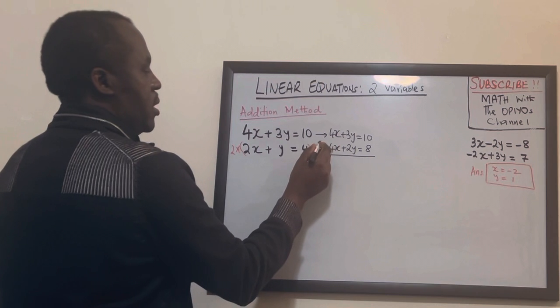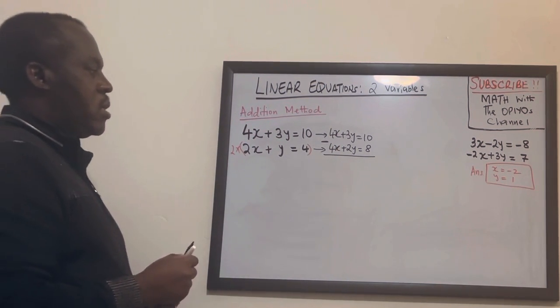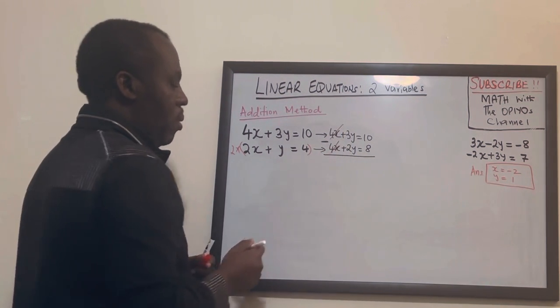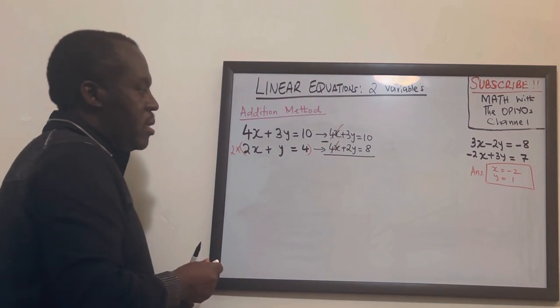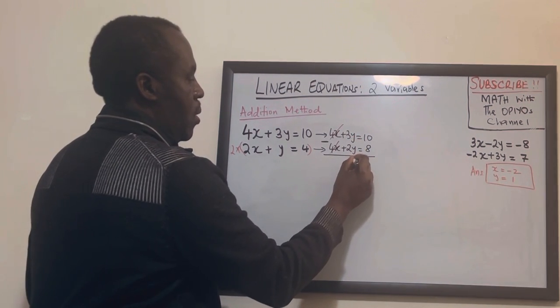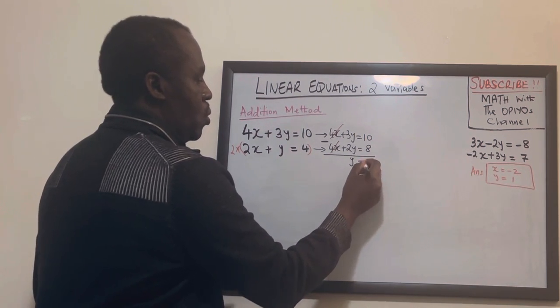Now if I subtract these two equations then 4x minus 4x will go so we don't have any more x's and 3y minus 2y will give us y. 10 minus 8 will give us 2.